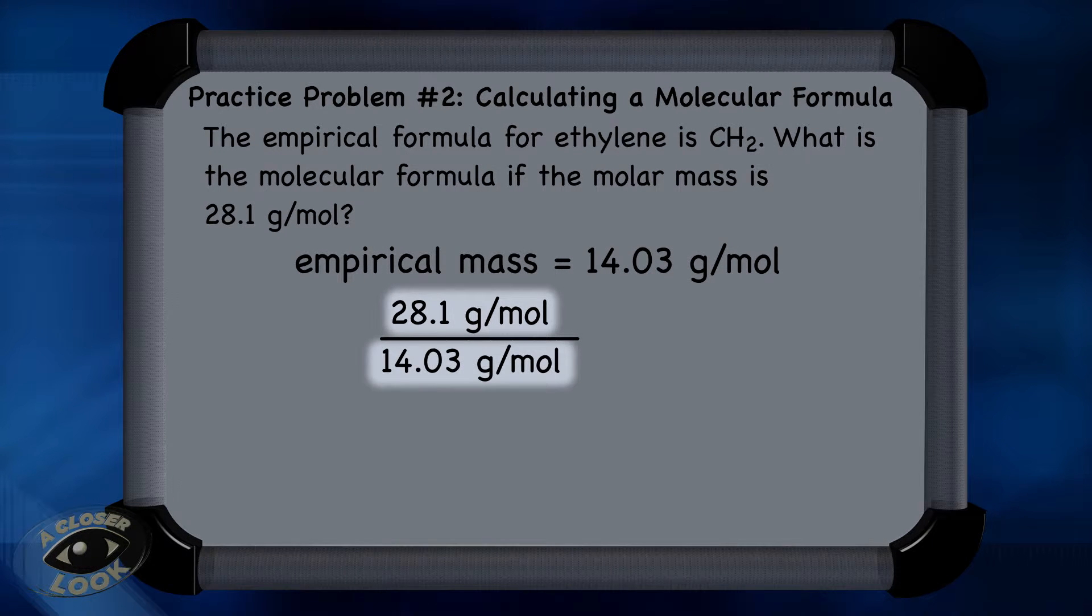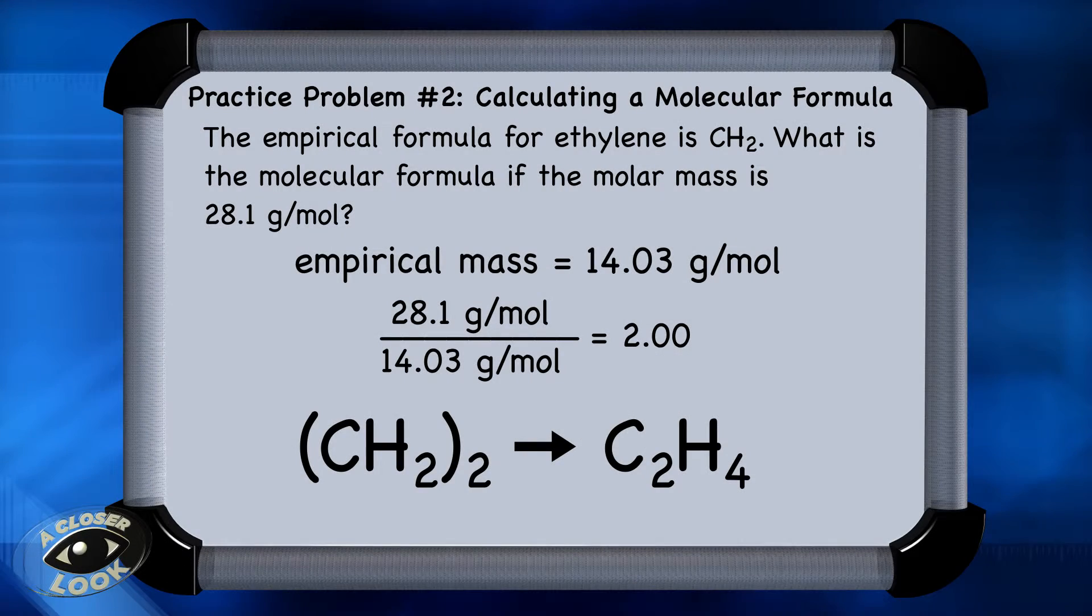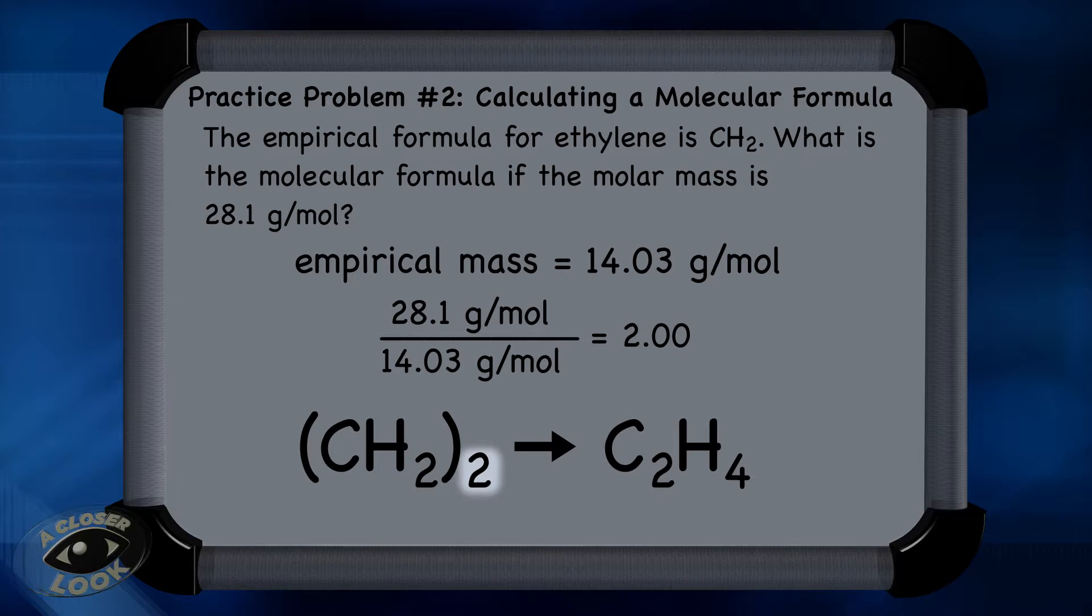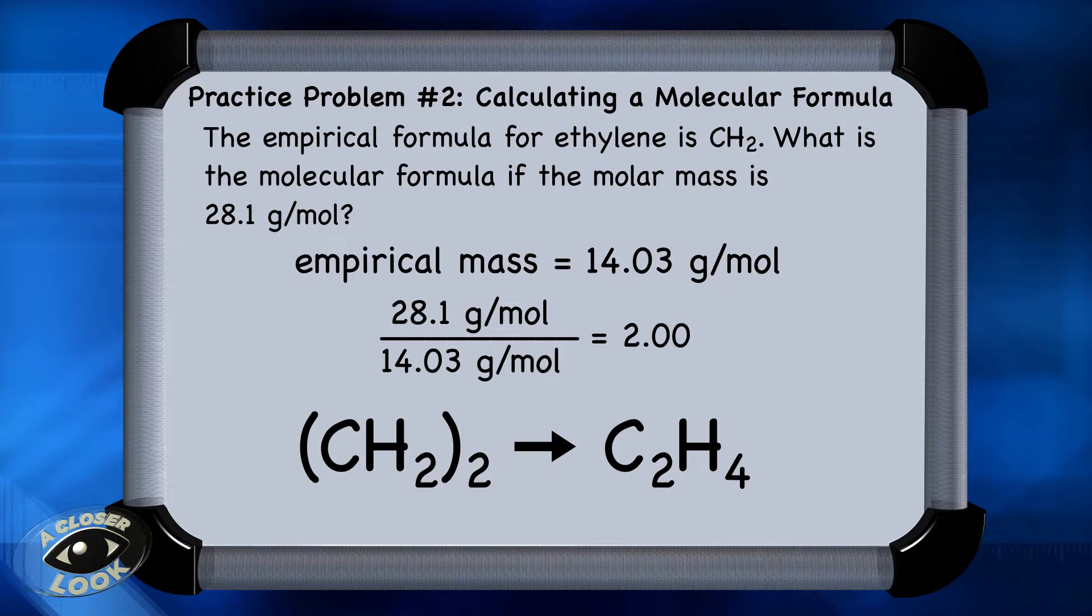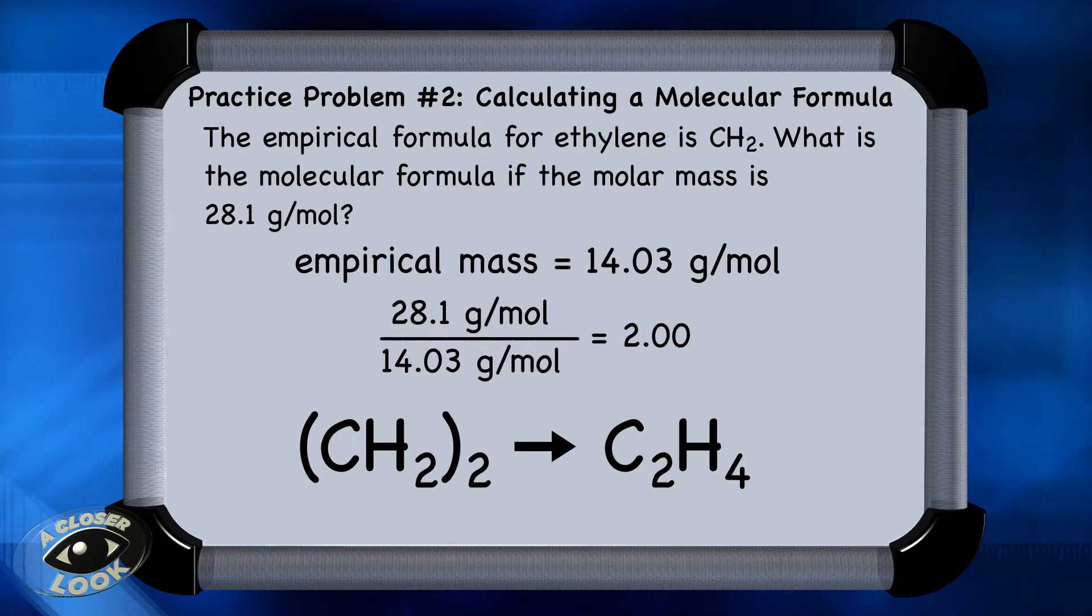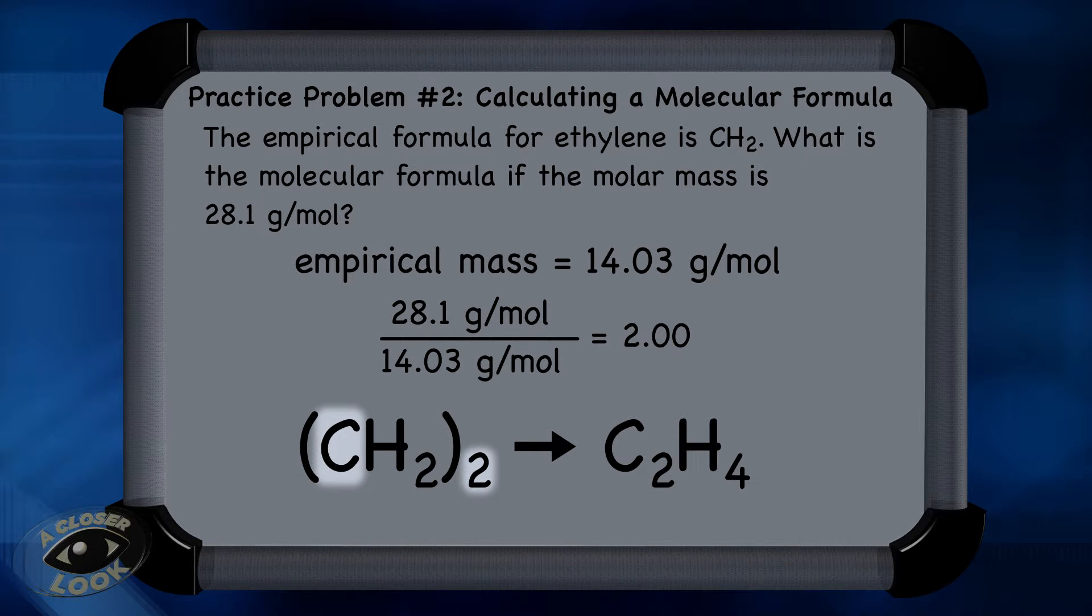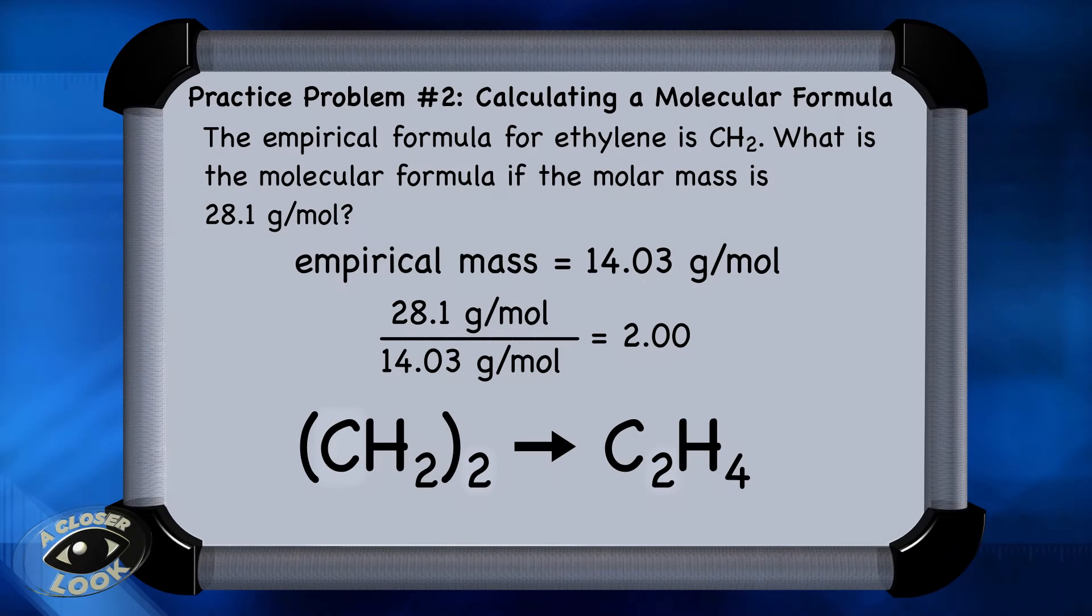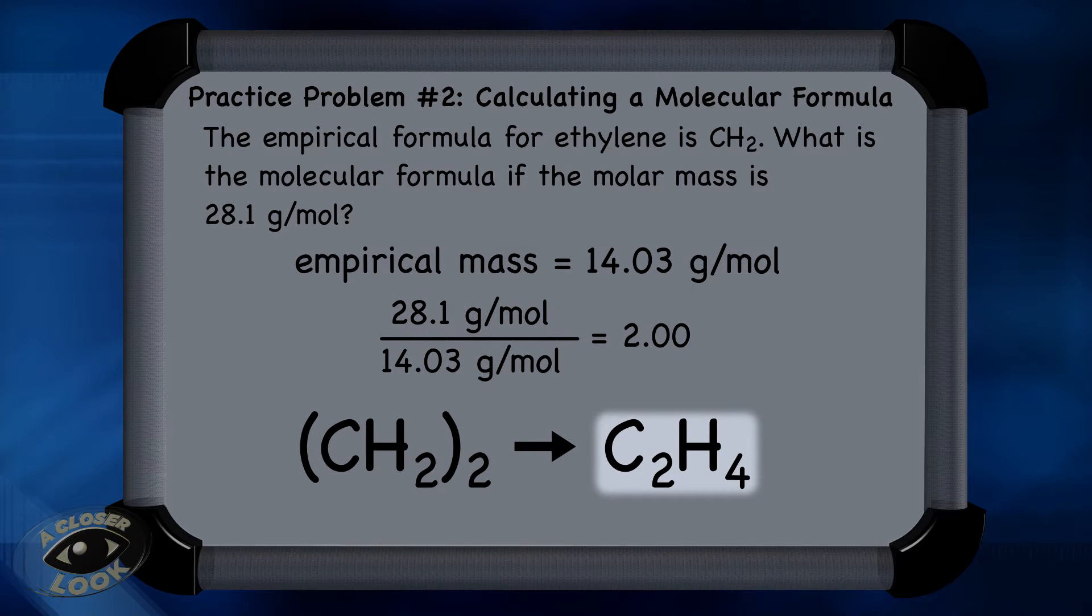When you divide those two, we get 2.00. That becomes the subscript that we distribute to all of the subscripts from the empirical formula. The 2 distributes here to the 2 from hydrogen, so we multiply 2 times 2 to get the new subscript of 4 for hydrogen. And the 2 distributes here to the carbon. Multiply 2 times the understood 1, and you get the new subscript of 2 for carbon. So the molecular formula for this compound is C2H4.